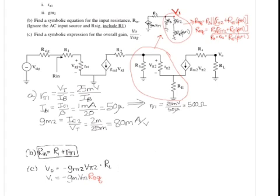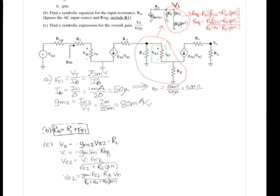Next, Vpi2 needs to be found. This can be found by using the same resistance reflection rule and seen by the circuit at the top, it will be a voltage divider.